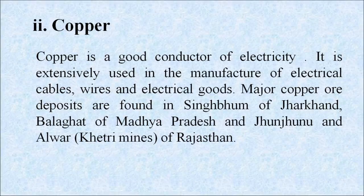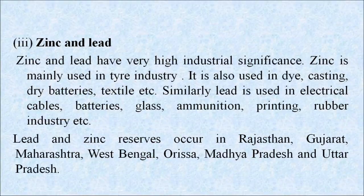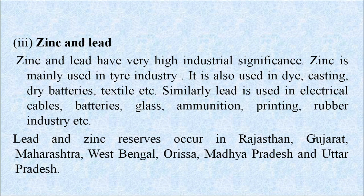Next is copper. Copper is a good conductor of electricity, extensively used in the manufacture of electrical cables, wires and electrical goods. Major copper ore deposits are found in Singhbhum of Jharkhand, Balaghat of Madhya Pradesh and Jhunjhunu and Alwar of Rajasthan. Next is zinc and lead. Zinc and lead have very high industrial significance. Zinc is mainly used in the tyre industry, die casting, dry batteries, textile, etc. Lead is used in electrical cables, batteries, glass, ammunition, printing, rubber industry, etc. Lead and zinc reserves occur in Rajasthan, Gujarat, Maharashtra, West Bengal, Odisha, Madhya Pradesh and Uttar Pradesh.